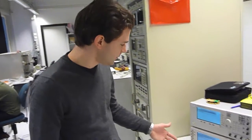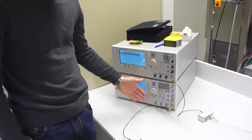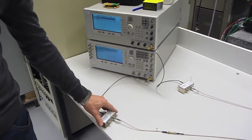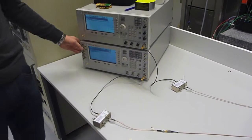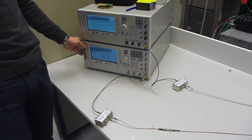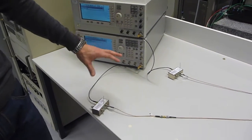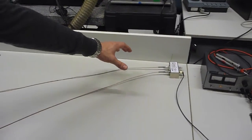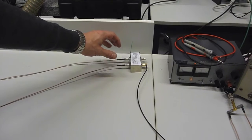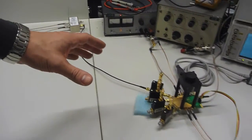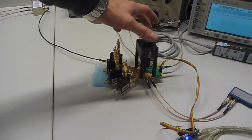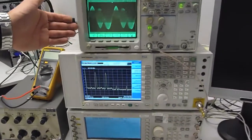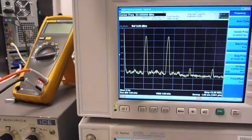However, if there is a second source available, like here where we have a second transmitting antenna with a second signal with a different frequency, both signals will travel to the same receiving antenna, are being processed in the same manner by the IC and will mix up at the output, making communication impossible.